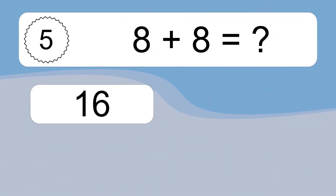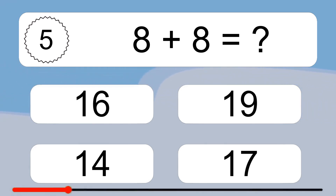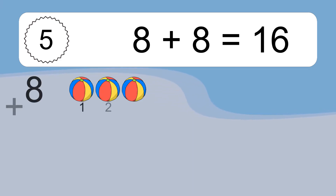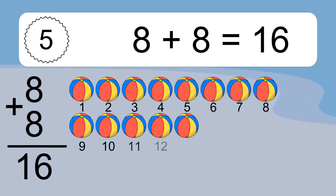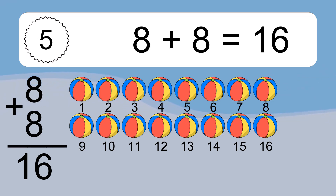8 plus 8 equals what? 8 plus 8 equals 16. Let's count it. 1, 2, 3, 4, 5, 6, 7, 8, 9, 10, 11, 12, 13, 14, 15, 16.